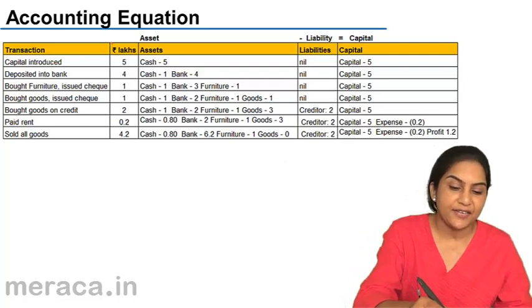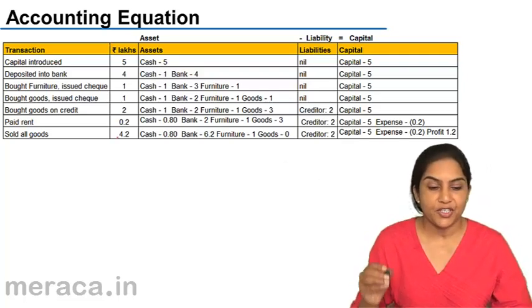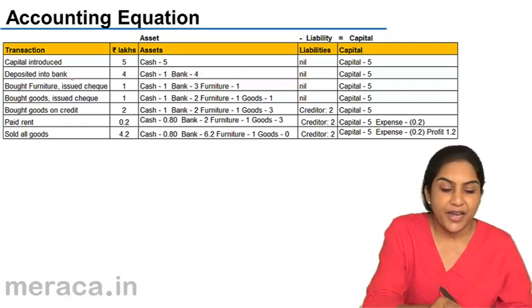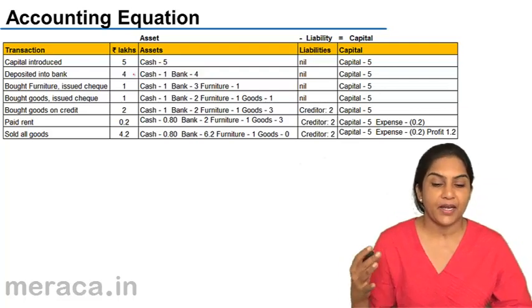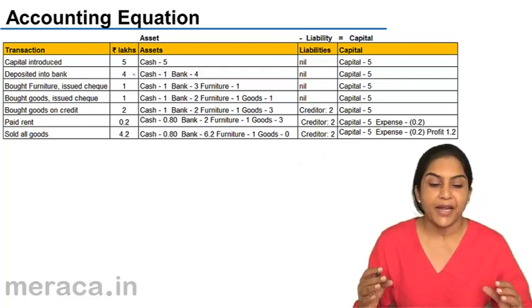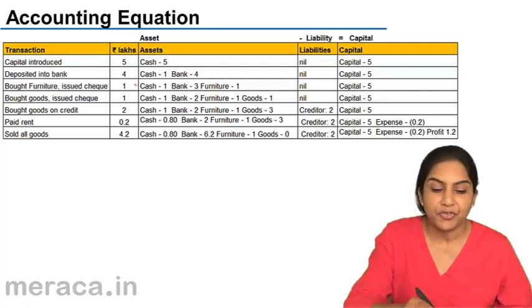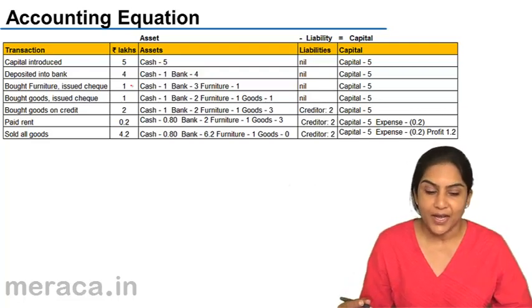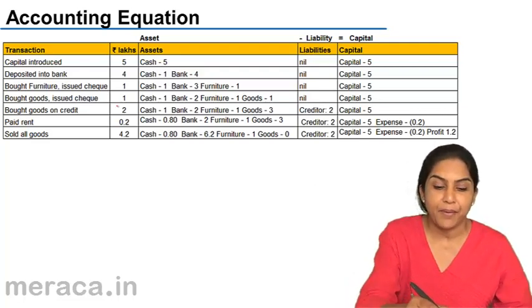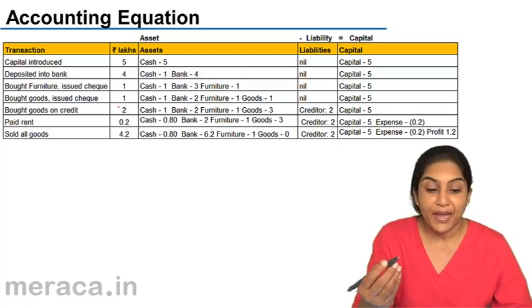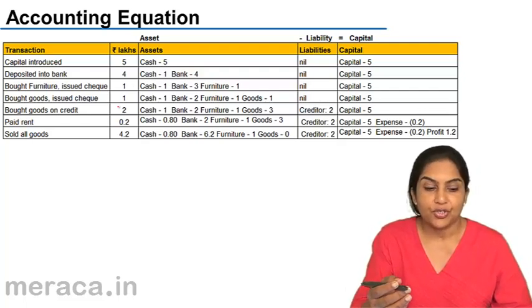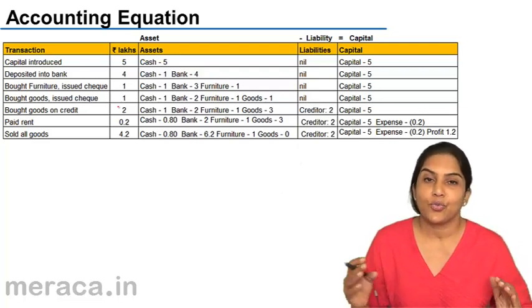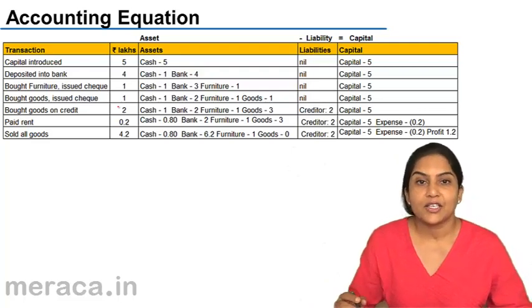These are the transactions which take place. What is the first transaction? For example, capital introduced amount of 5 lakhs. Next, you have cash deposited into bank amounting to 4 lakhs. Similarly, bought furniture and money has moved out of the bank because we issued a check of 1 lakh. Buy goods, issue check 1 lakh. Similarly, buy goods on credit, pay rent, sell goods. These are certain transactions and we will see whether assets is always equal to liabilities in all these situations.